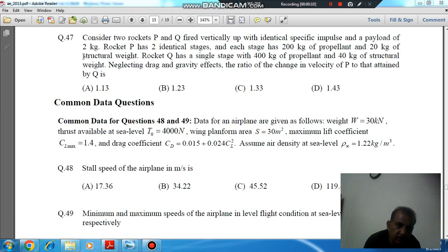Question number 47: Consider two rockets P and Q fired vertically up with identical specific impulse and a payload of 2 kg. Rocket P has two identical stages, each stage has 200 kg of propellant and 20 kg of structural weight. Rocket Q has a single stage with 400 kg of propellant and 40 kg of structural weight.